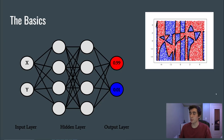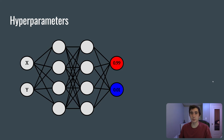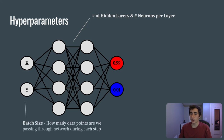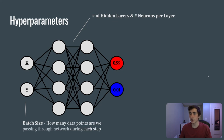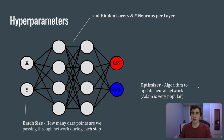Next, let's talk about hyperparameters. The most obvious ones are the number of hidden layers and neurons per layer. Another is batch size — how many data points are passed through the network each update step. We're not typically passing in a single point; we might pass in 16, 32, or 64. The batch size determines that. Then there's the optimizer — the algorithm that updates the neural network. Adam is usually a pretty safe bet.